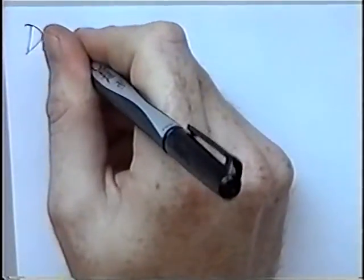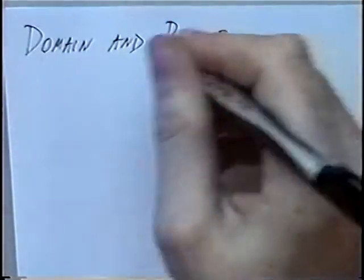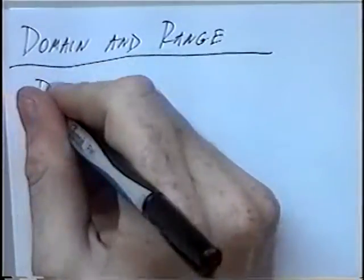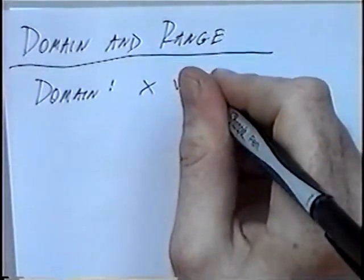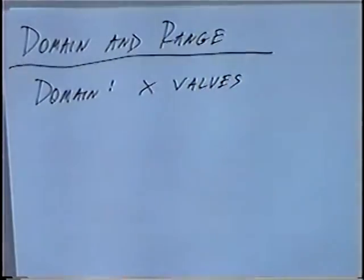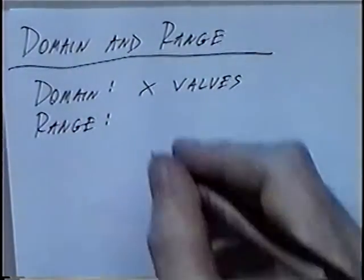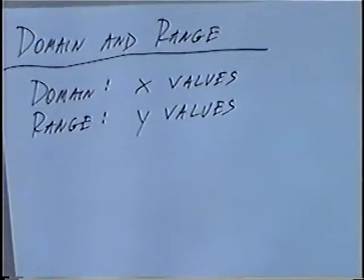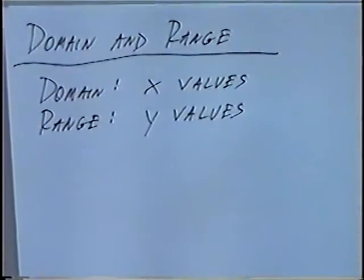The title of the first section is Domain and Range. Two definitions: Domain — domain is X-values. And the second definition, Range — range are the Y-values. So when looking at a graph or a list of numbers, the domain will be all the X-values and the range will be all the Y-values.